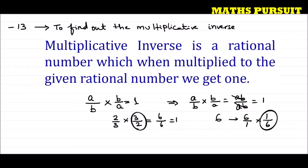Similarly, if the given number is minus 6, its multiplicative inverse — writing it in the form of minus 6 upon 1 — ideally should be 1 upon minus 6. But we should not keep the negative sign in the denominator; we should always put the negative sign in the numerator. So the multiplicative inverse of minus 6 upon 1 is minus 1 upon 6, not 1 upon minus 6.